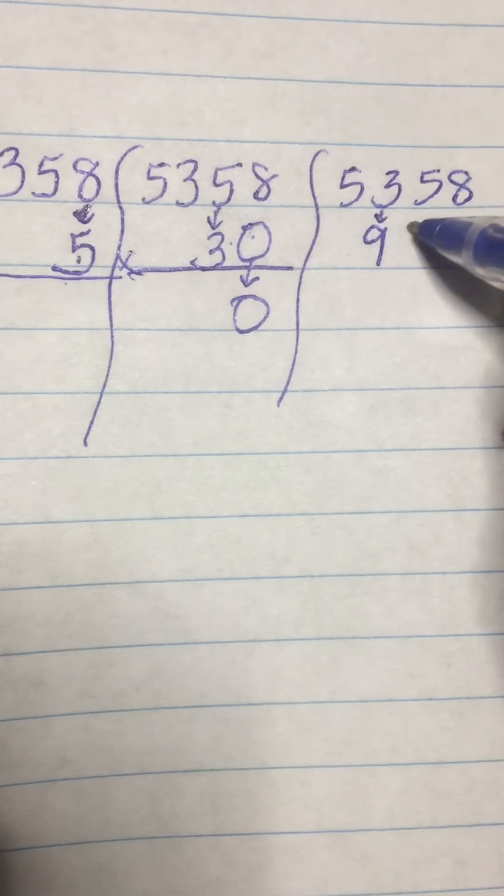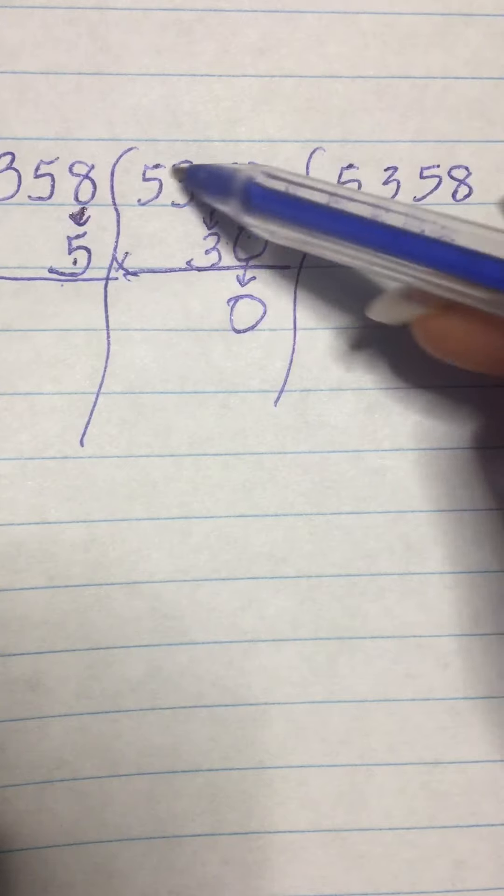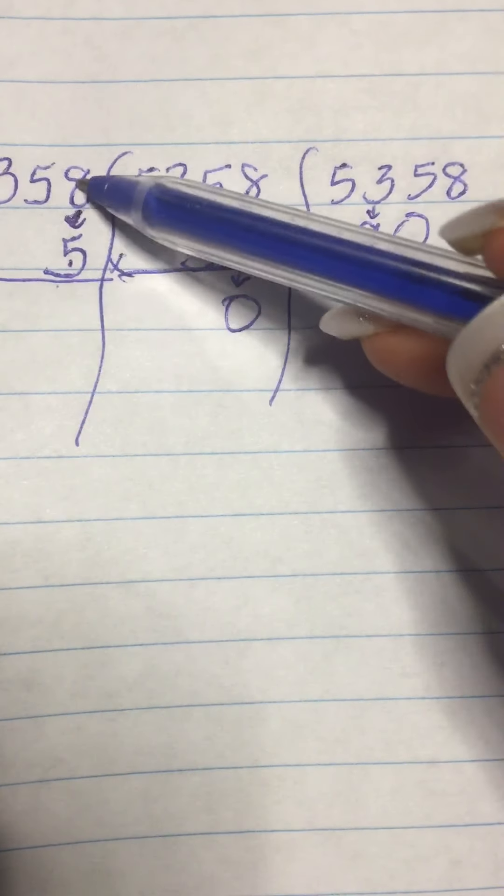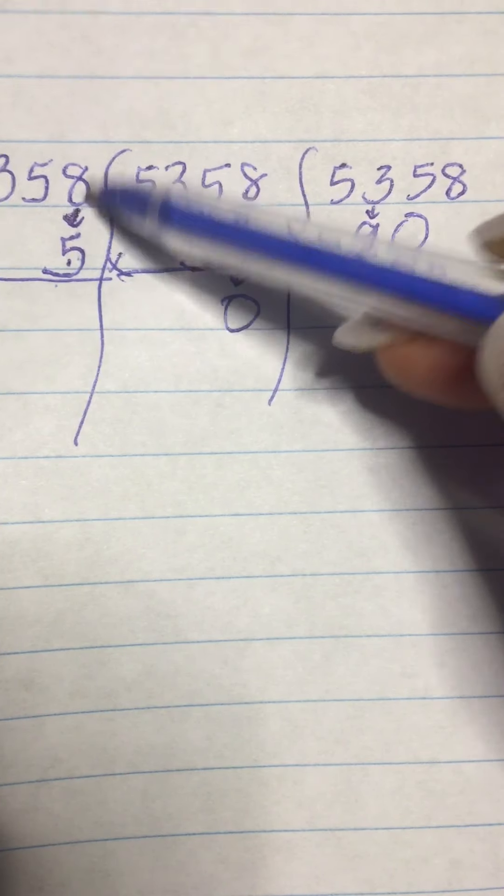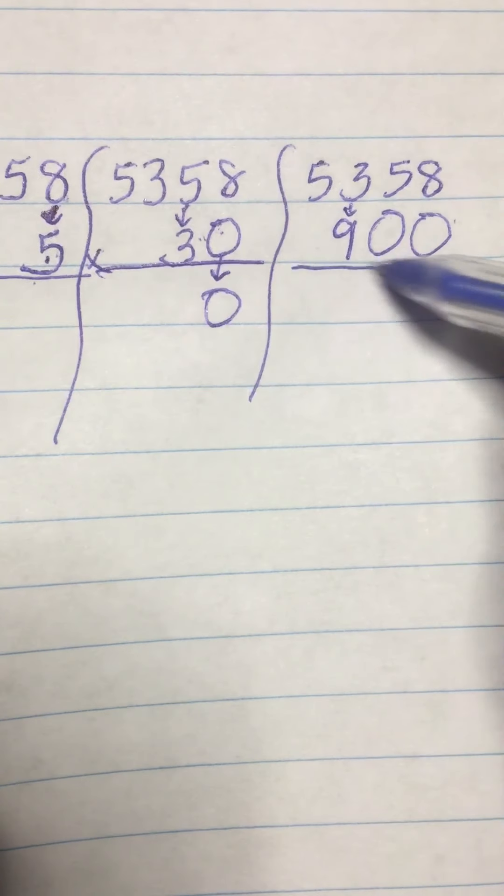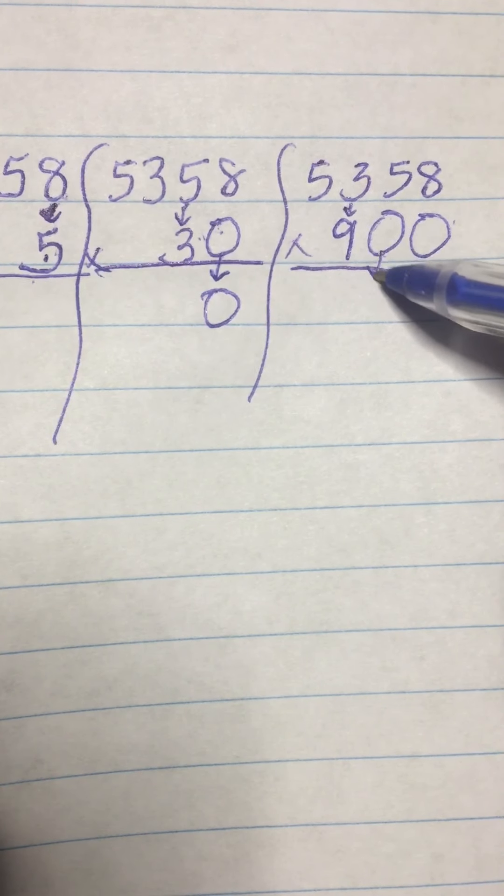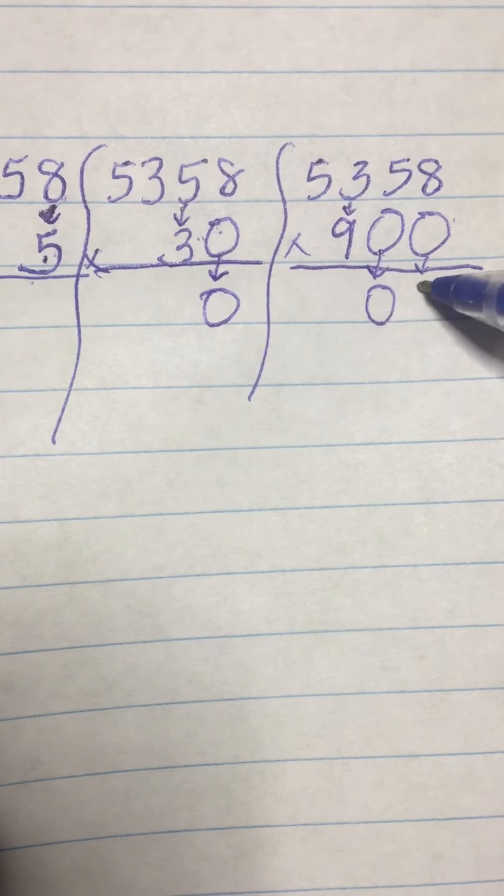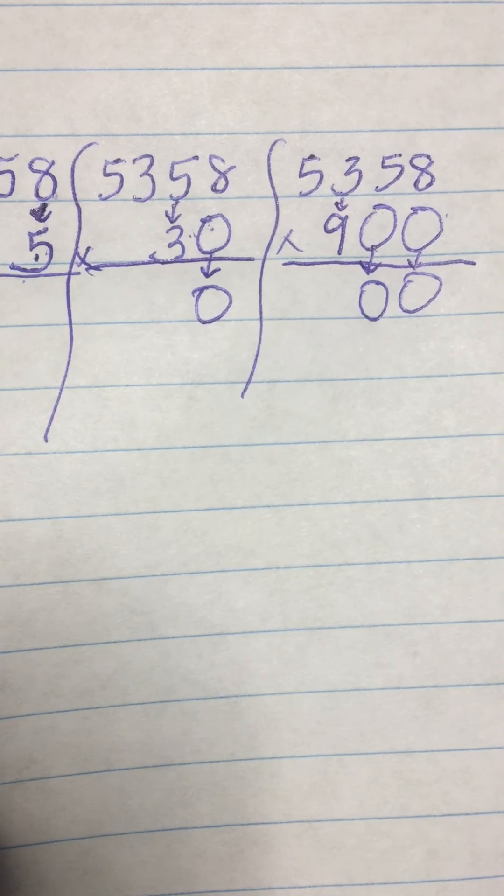Over here, I already have a number underneath my five. I don't need another number underneath my five. Here, I have a number five underneath my eight. I don't need another number underneath my eight. So, these are two zero placeholders that we just bring down in our answer.